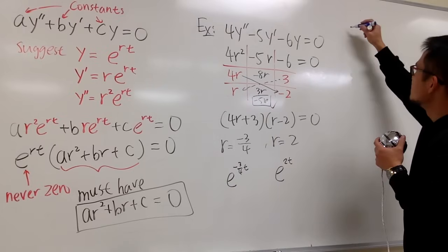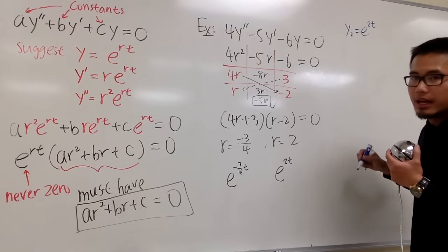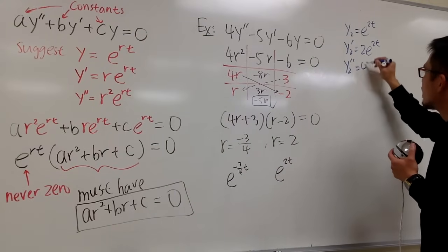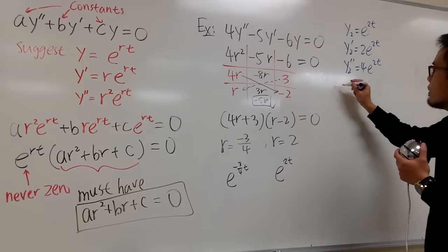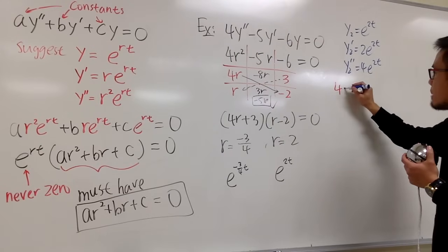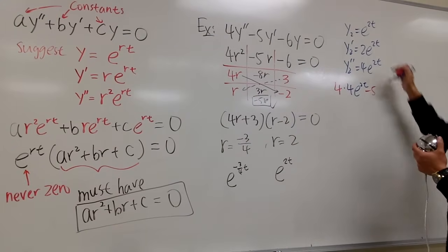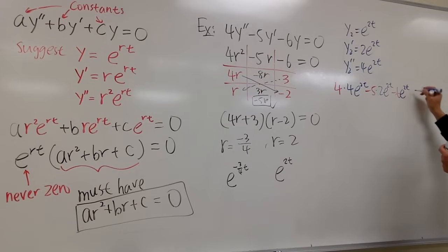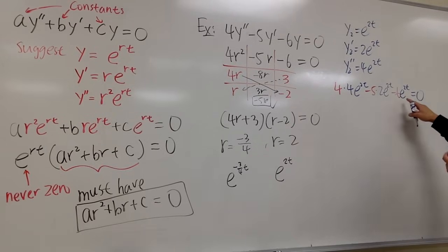Let y2 = e to the 2t. Differentiating: y2' = 2e^(2t), and y2'' = 4e^(2t). Plugging into the original: 4 times 4e^(2t), minus 5 times 2e^(2t), minus 6 times e^(2t). That gives 16 − 10 − 6 = 0. So 0 = 0 — it checks. This solution definitely works.